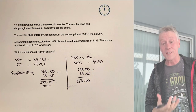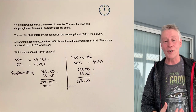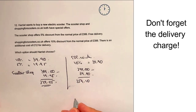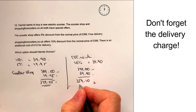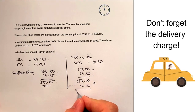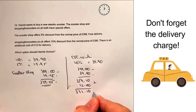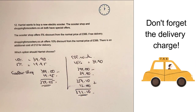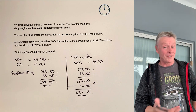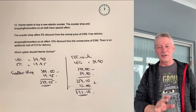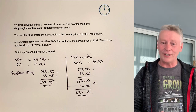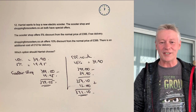However, with a lot of these internet companies there's a delivery charge, so we've got to add that £12 on top. Adding the £12, that's going to give us a total price at Shopping for Scooters of £371.10. So actually, even though we've got that delivery charge, it's still slightly cheaper to use the website in this particular case — though not always. Hope that's been useful to you. Please do add a comment below if you're not sure about anything. I'll look forward to seeing you in the next video.